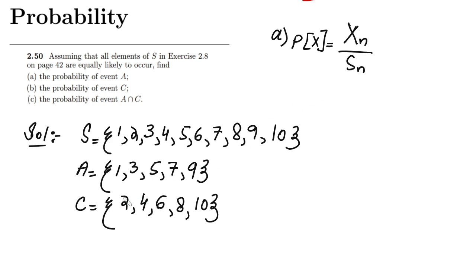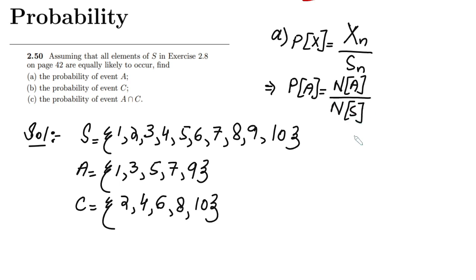However many elements we have in the event, those demonstrate the chances of occurrence of that event. So to find the probability of A, I have to find the number of elements in A divided by the number of elements in the sample space. The number of elements in A are: one, two, three, four, five — so we have five elements in event A.